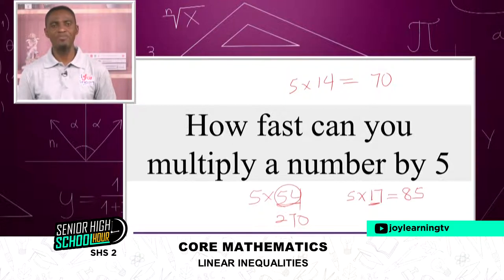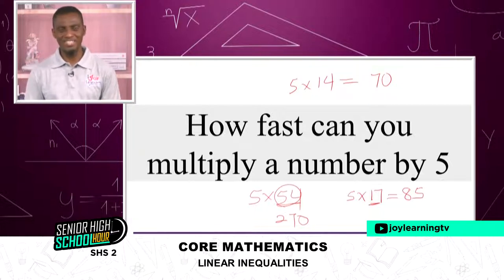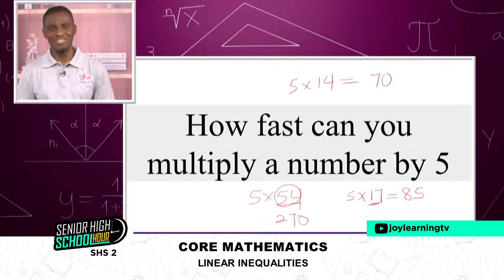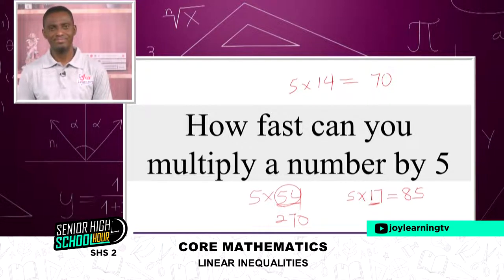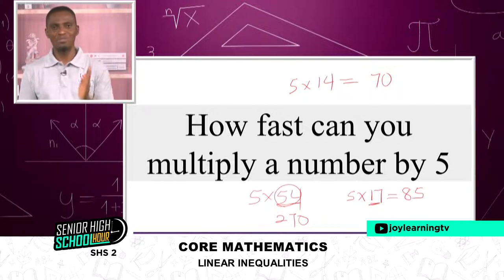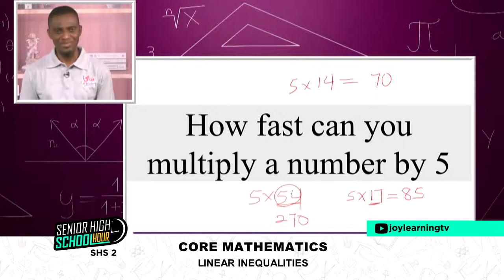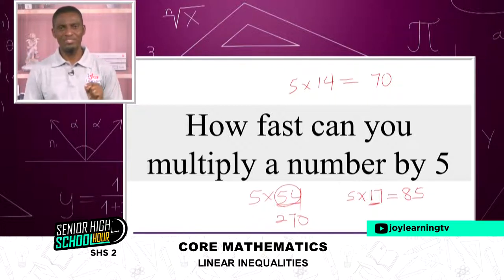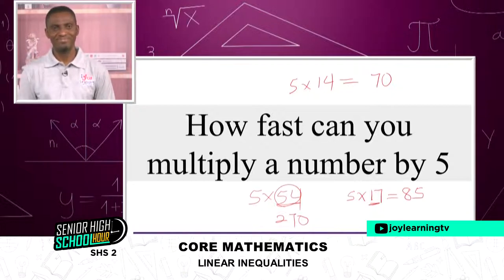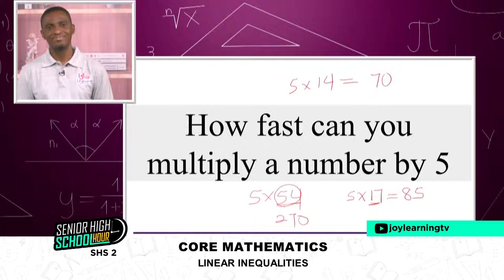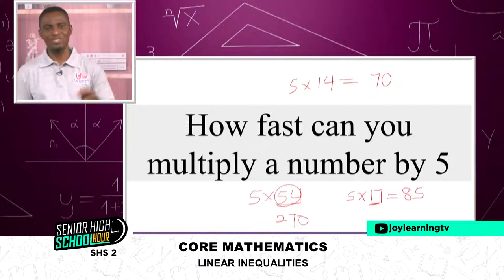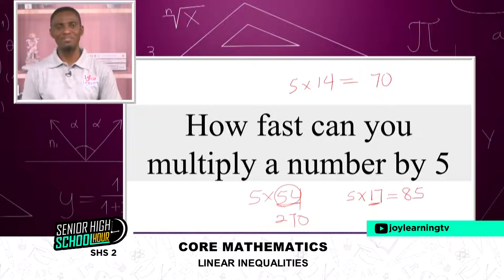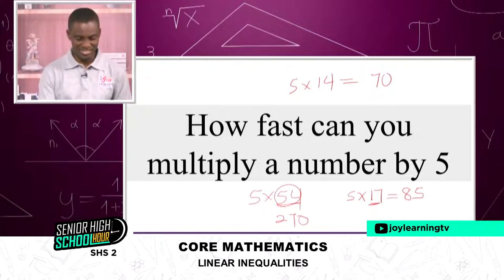Any number multiplied by five ending in an even result ends with zero; odd results end with five. Let's try: five times 36 — split into two gives 18, attach zero — answer is 180. Last drill: five times 61 — 61 is odd, subtract one gives 60, divide by two gives 30, attach five — answer is 305.